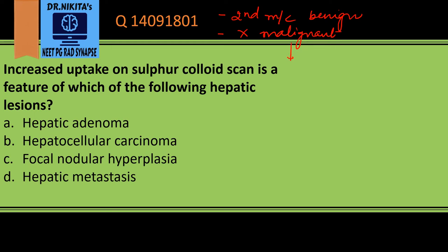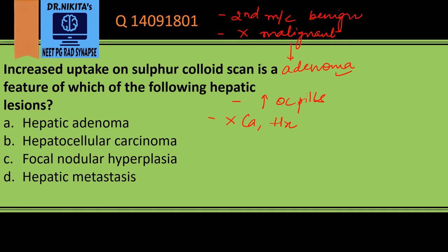It is very important to differentiate FNH from adenoma, because adenoma you need to resect. Adenoma can grow in size with OCP pills — though OCP pills do not cause it, it can grow in size with them. FNH does not have any calcification or hemorrhage, which is commonly seen with adenoma.